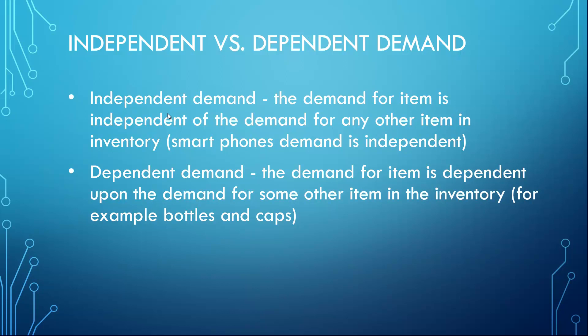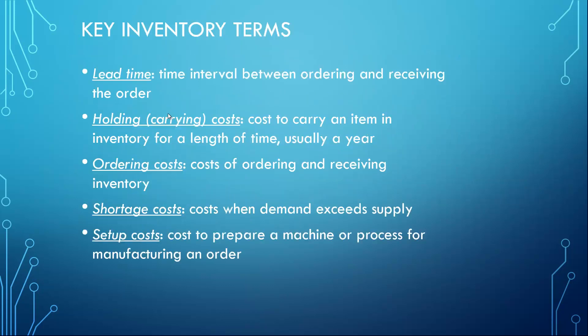Dependent demand means that demand for an item depends on the demand for some other items — maybe one or a few items in inventory. For example, bottles and caps: the number of caps required will be based on the number of bottles that will be required to manufacture.